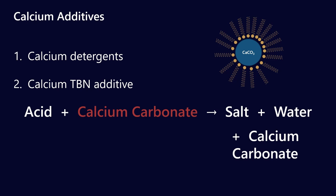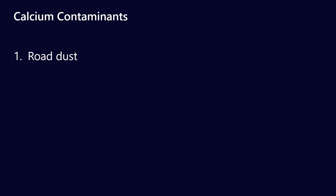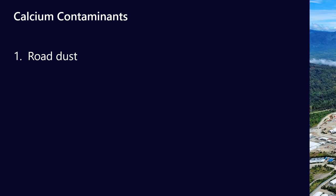But there are other sources of calcium. What if I have calcium in my oil but it's not part of the actual fluid formulation? What if it is a contaminant? Well, the first way that we can get it is road dust. If you're in a mobile equipment application or a mine site, a construction site, road dust is a really common way that we get calcium contamination.